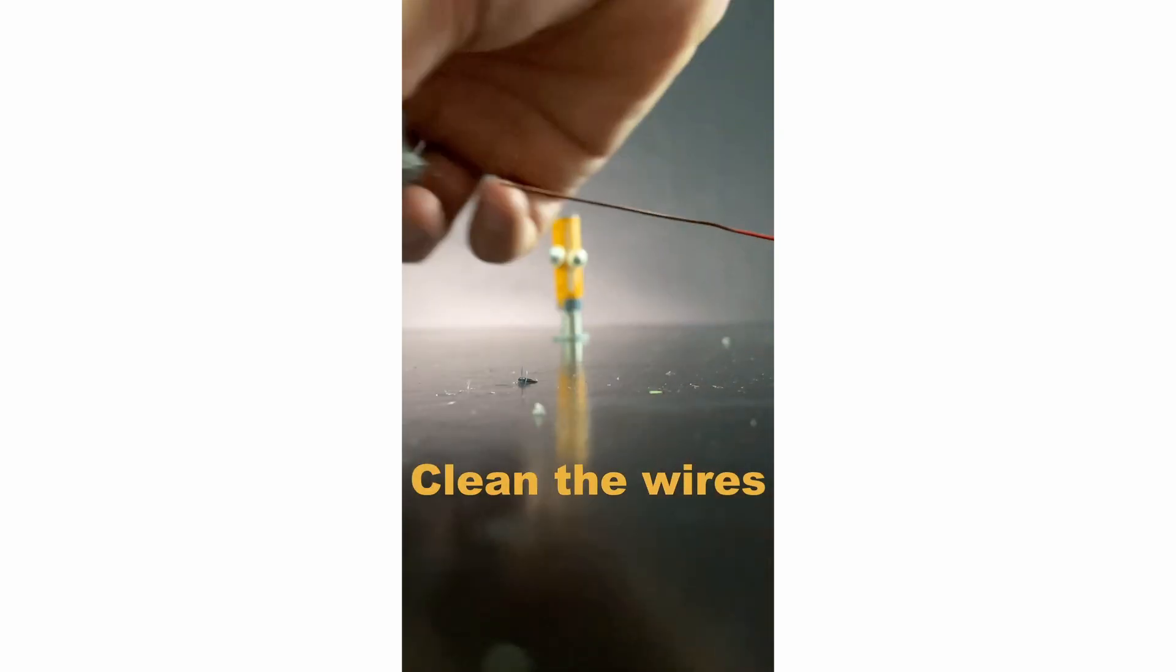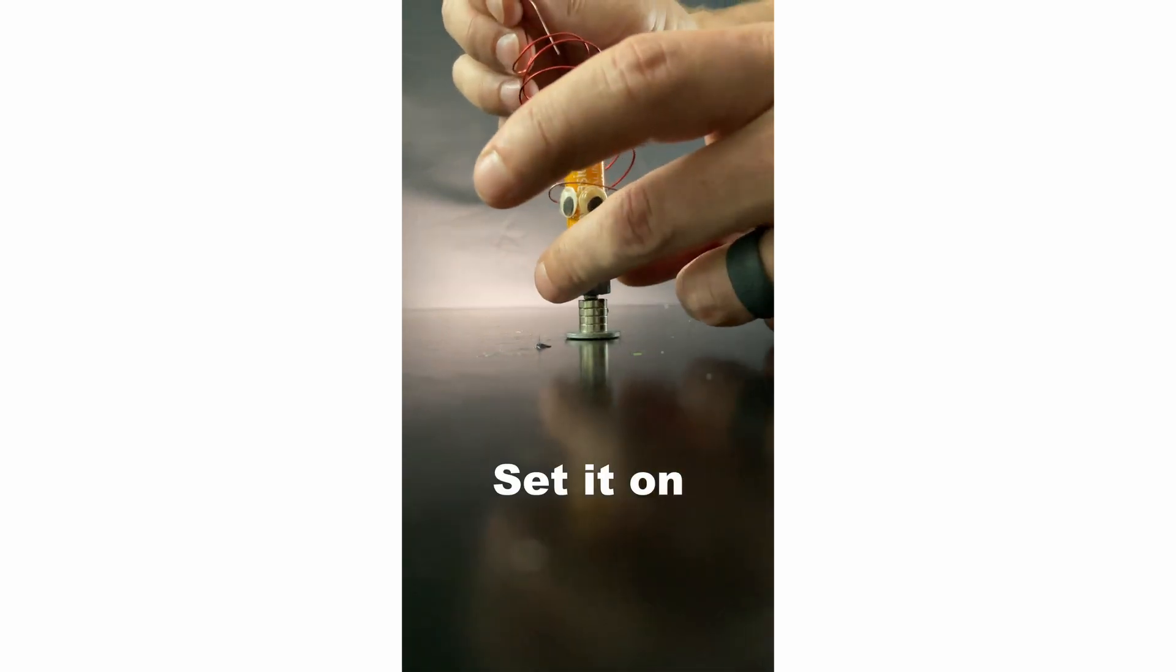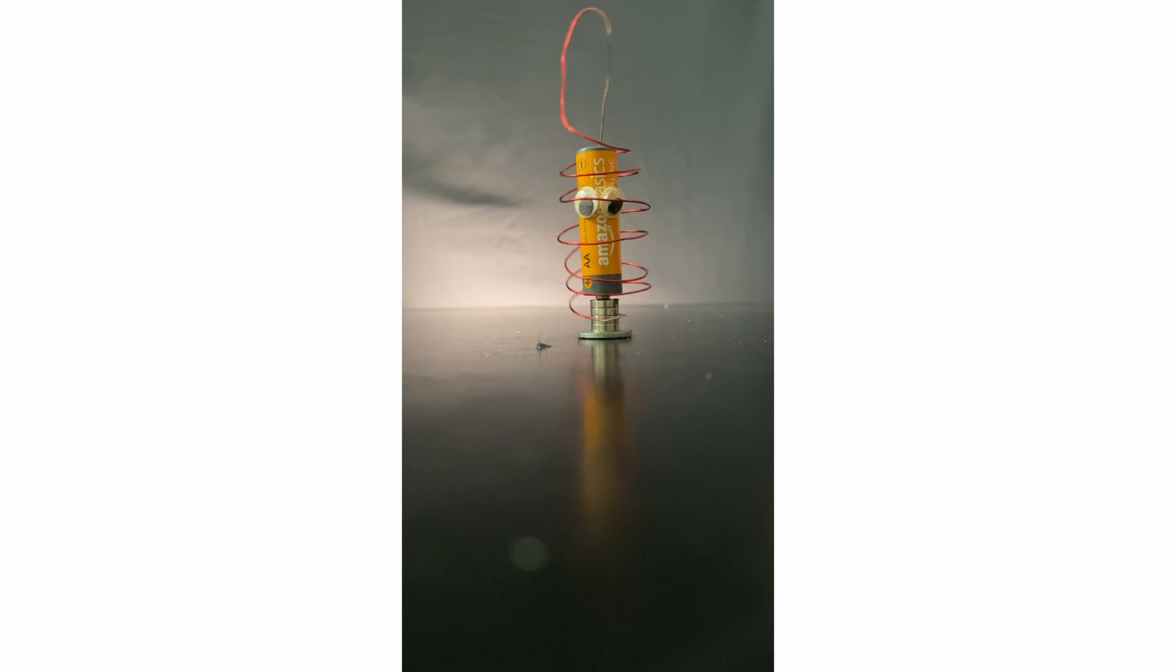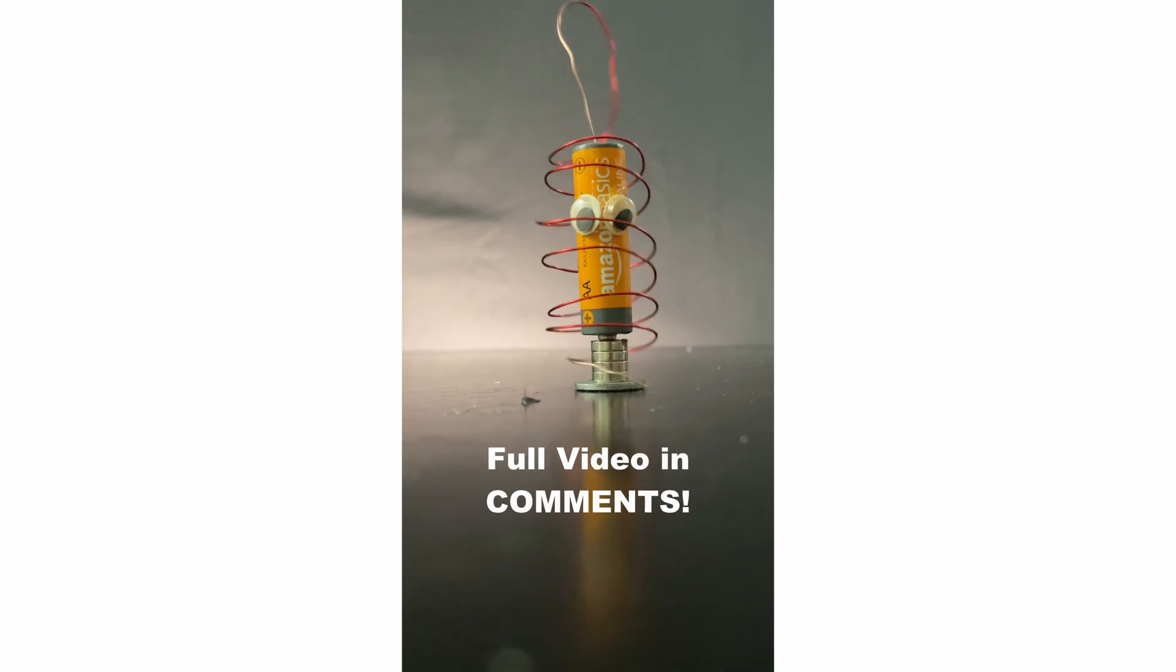Steel wool. Clean the wires. Nice. Bend wire to fit the battery. Set it on. Nope. Adjust. It's going. Electrons move out of the battery, through the wire, and feel a force from the magnetic field in the process. The full video is in the comments. Come back for more.